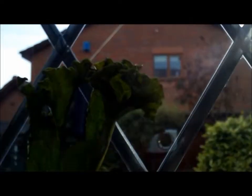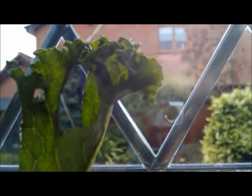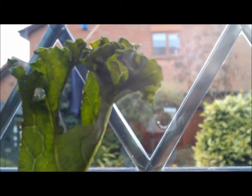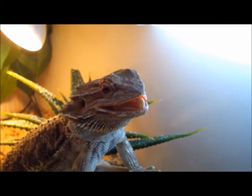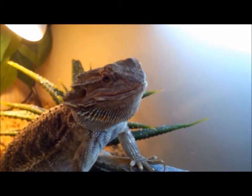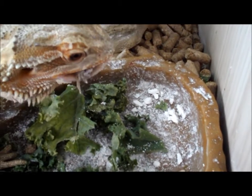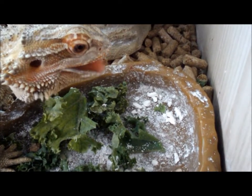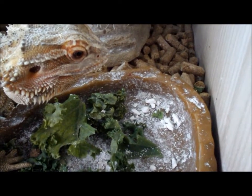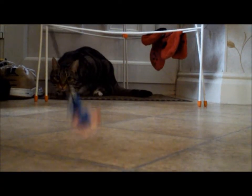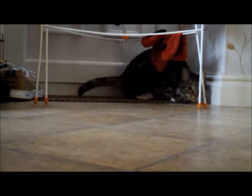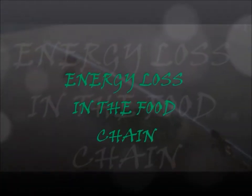Every organism needs to obtain energy, and it can do this by either using energy from the sun, or by consuming another organism. The flow of energy between one organism and another, through consumption, is called the food chain. However, not all the energy from one organism is passed on to the other. This video will look at energy loss in the food chain.